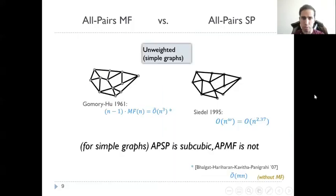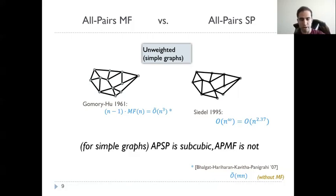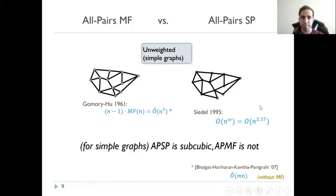For unweighted graphs, we have the algorithm by Seidel from 1995, which runs in the time of a single fast matrix multiplication — essentially that running time with polylog factors. For Gomory-Hu, the running time is just n cubed. So for simple graphs, APSP is subcubic while all-pairs maximum flow is not. So maybe this answered the question — maybe it's another indication.